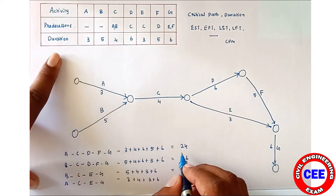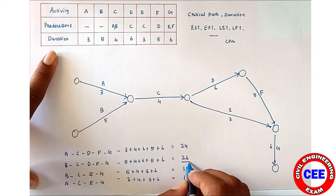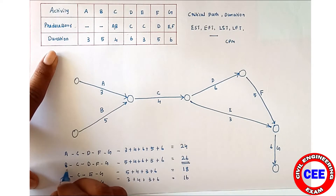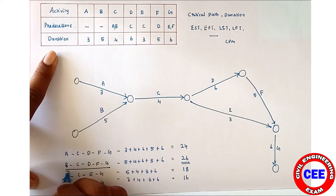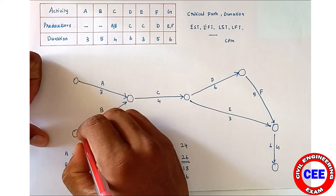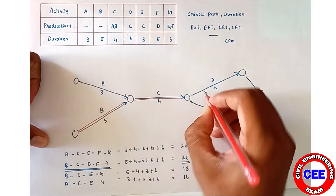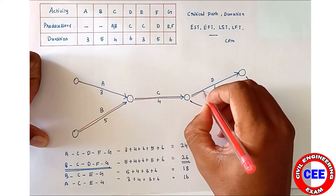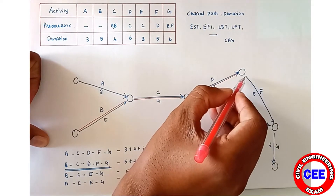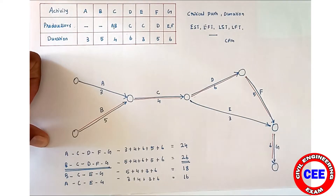The longest duration is the critical duration and the longest path is the critical path. So 26 is the critical duration, and B–C–D–F–G is the critical path. We can highlight the critical path: B, then C, then D, then F, and G.